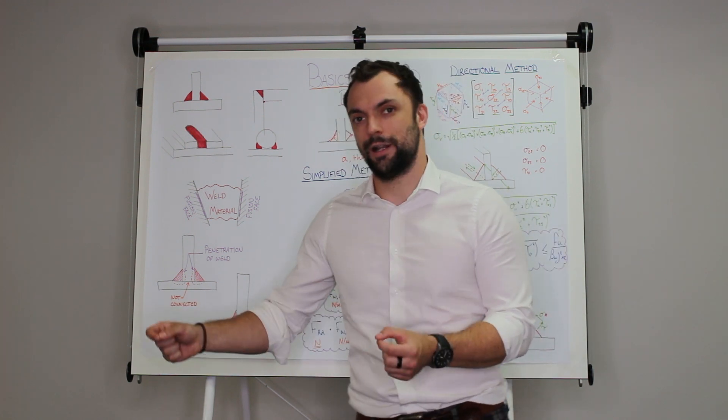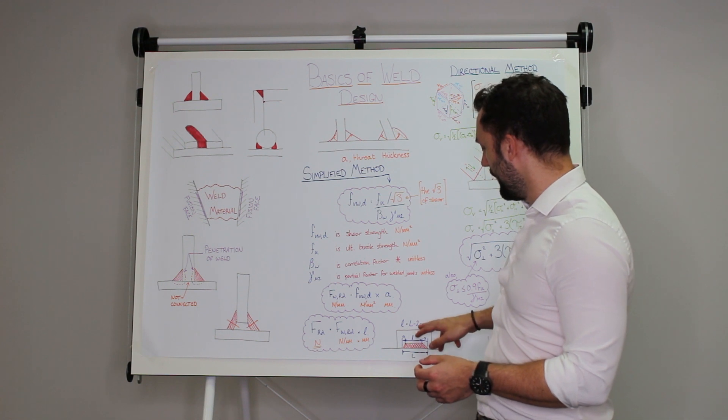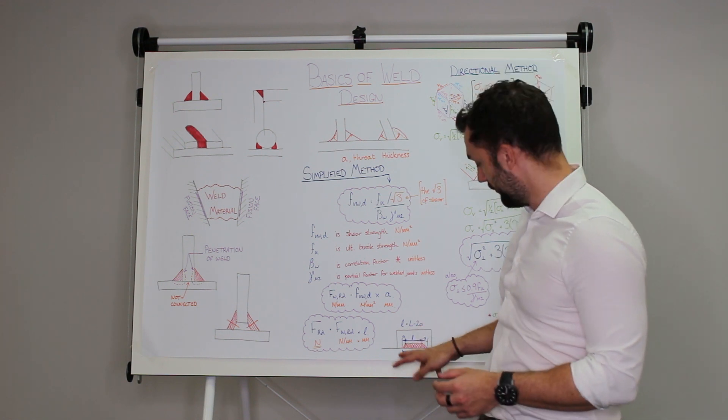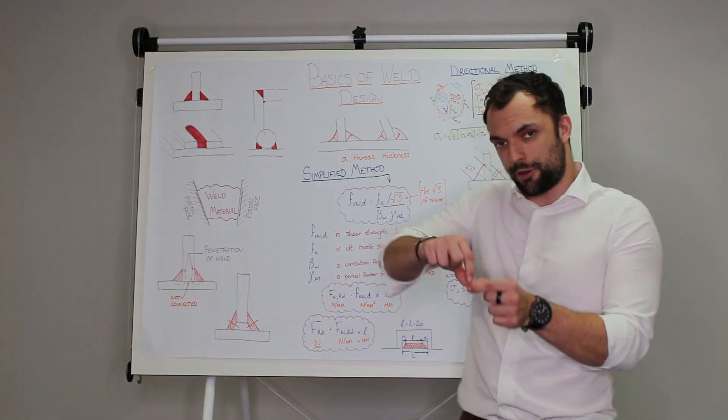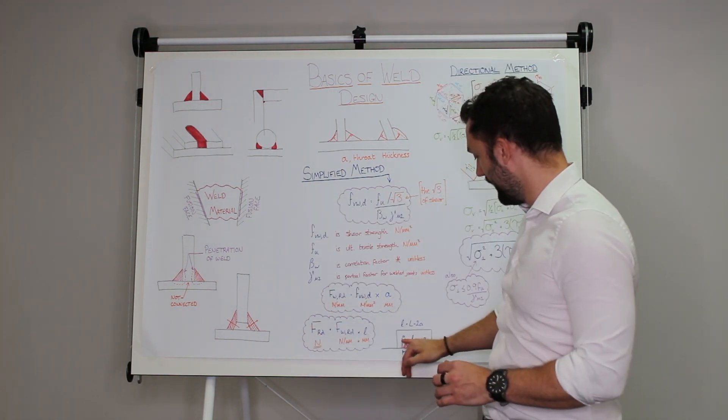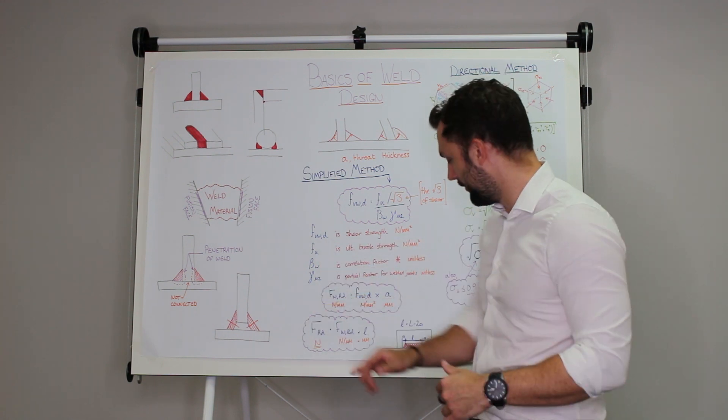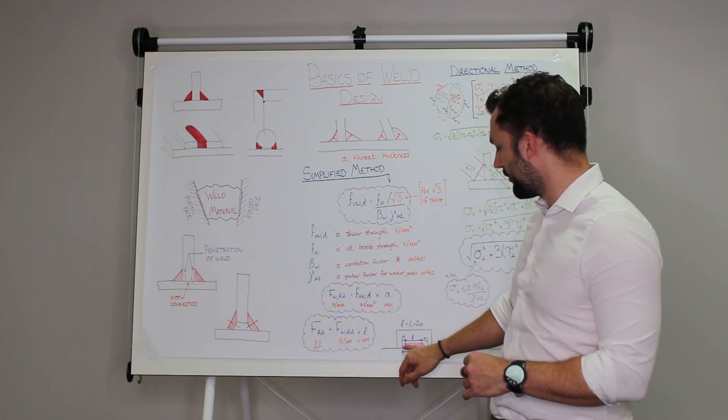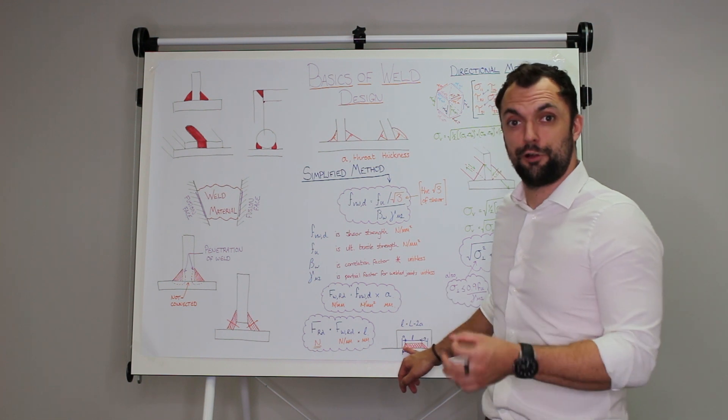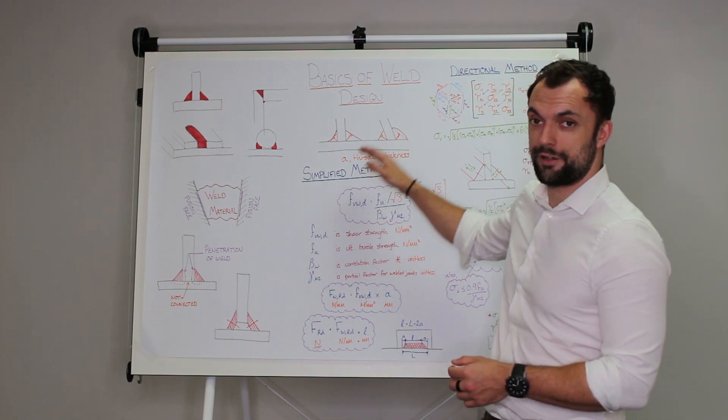But we can't just use the measured length of a weld, so the effective length is that overall length take away two lots of the throat thickness from either side of the weld. If you have a continuous run of weld all the way around that has no end then you don't have to take these away, but if you have one straight run of weld that has a distinct start and end you assume that the weld hasn't quite got to full thickness and therefore full strength for a length at either side and that's equal to the throat thickness.